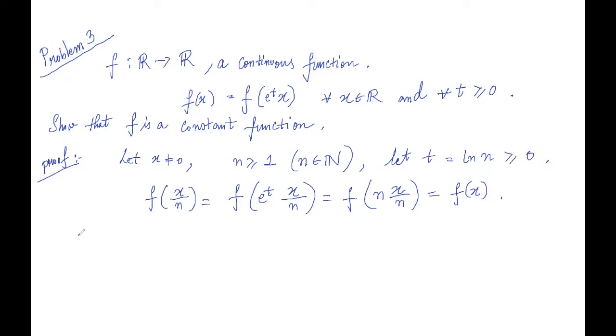Now, taking the limit of n tending towards infinity and using the continuity of f, because we have been given a continuous function, so let's use the continuity of it. So f of limit n tends to infinity x over n, that is nothing but f of 0. And this is equal to...